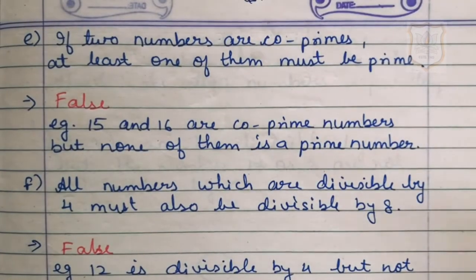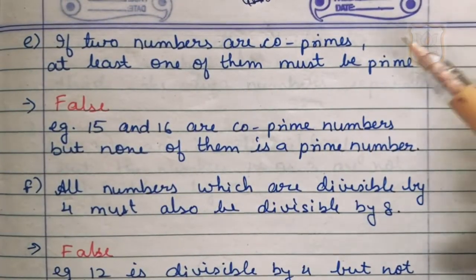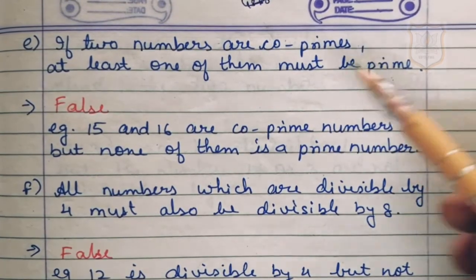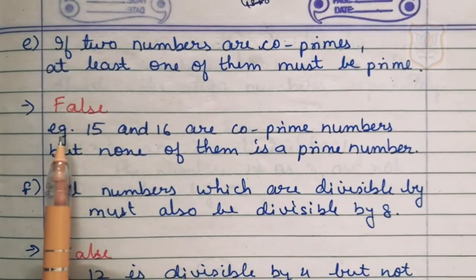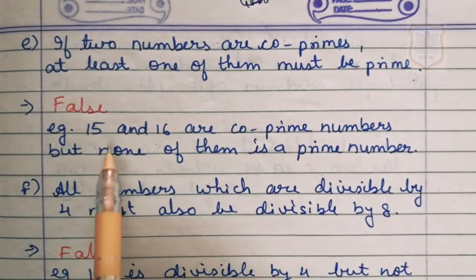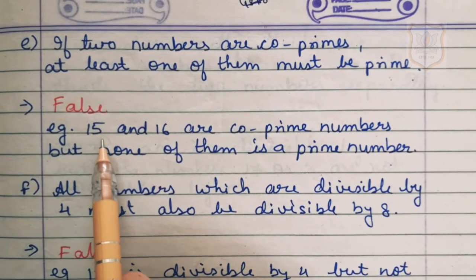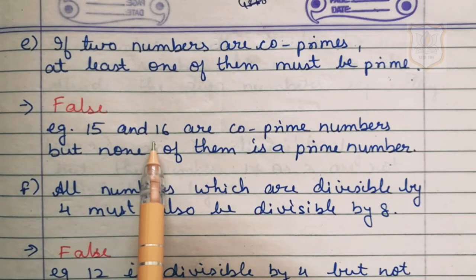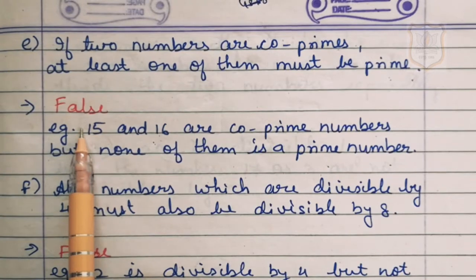Part E of question number 1: if two numbers are co-prime, at least one of them must be prime. If two numbers are co-prime, must one of them be a prime number? The answer is false. For example, 15 and 16 are co-prime numbers — their only common factor is 1 — but neither of them is a prime number. So the statement is false.